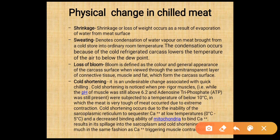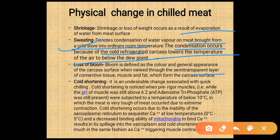Physical changes in chilled meat: shrinkage occurs due to evaporation of water from the meat surface. Sweating denotes condensation of water vapors on meat brought from cold storage into room temperature. Loss of bloom — bloom is defined as the color and general appearance of the carcass surface when viewed through a semi-transparent layer of connective tissue, muscle, and fat. Cold shortening is an undesirable change when pre-rigor muscles with pH still above 6.2 and ATP still present are subjected to temperatures below 10 degrees Celsius, resulting in very tough meat.